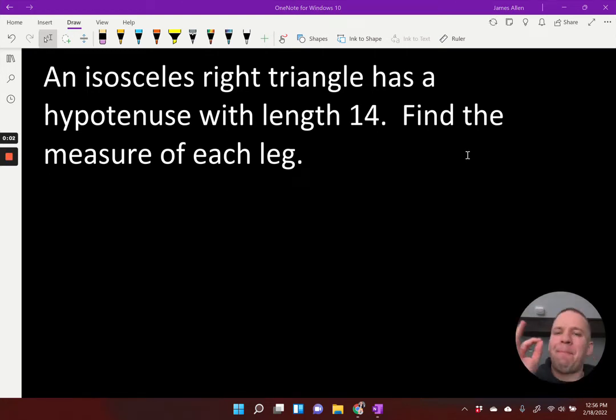An isosceles right triangle has a hypotenuse with a length of 14. Find the measure of each leg. An isosceles right triangle.